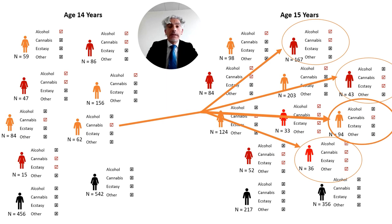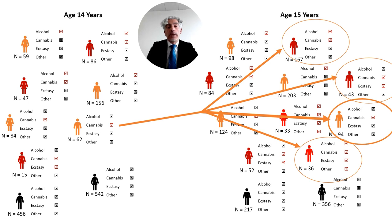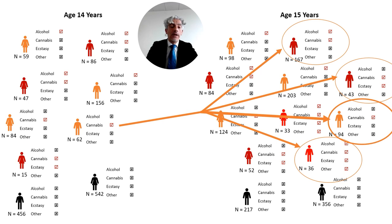In other words, latent transition analysis allows to identify fewer groups that represent variability of behavior patterns at each age, and investigates the patterns of change across time — what are the probabilities of individuals remaining in the same categories or moving into others across time. It also allows to investigate what are the factors, for example gender, that can affect change over time.